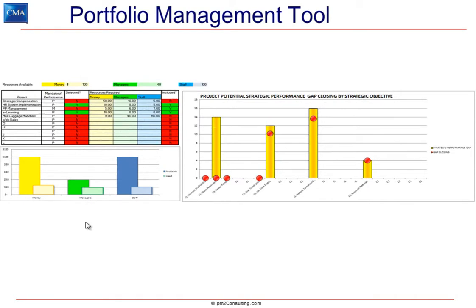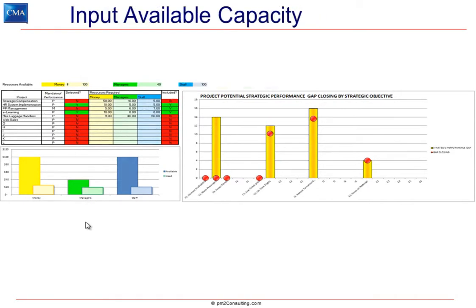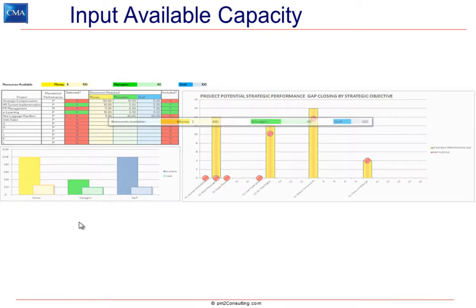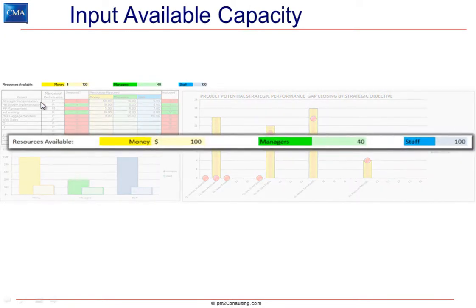Let me overview what's here. First, we're going to take a look at the available constrained resources you need to work with. In this example, we're saying: money — I've only got $100,000; managers — I've only got 40 FTEs; and staff — I only have 100 FTEs I can use towards projects.